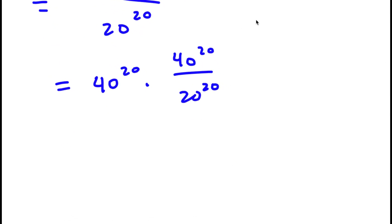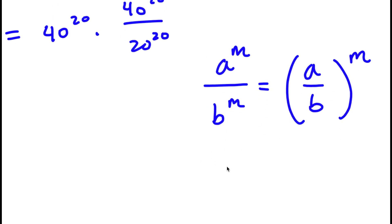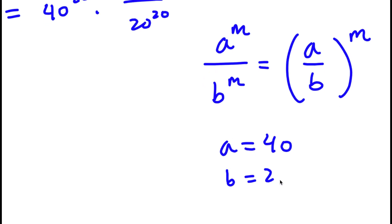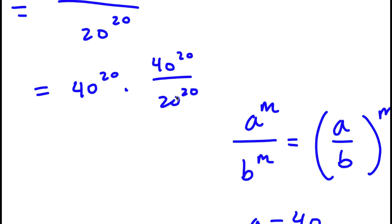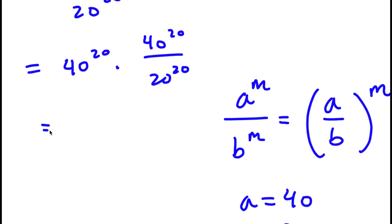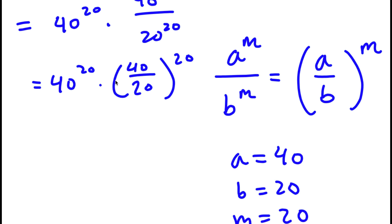If I have something in the form a to the power of m over b to the power of m, this is the same thing as a over b to the power of m. Here, a is 40, b is 20, and m is 20. So 40 to the power of 20 over 20 to the power of 20 can be rewritten as 40 over 20 to the power of 20. And 40 divided by 20 is simply equal to 2.